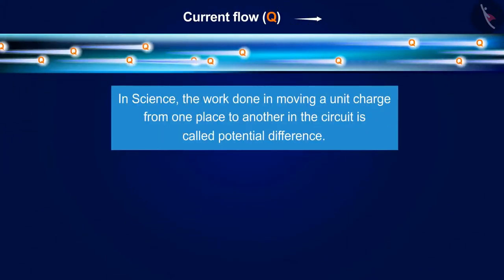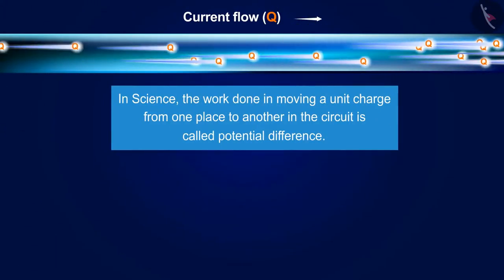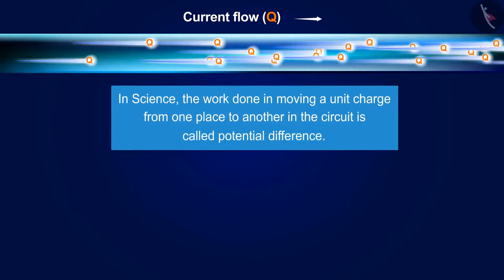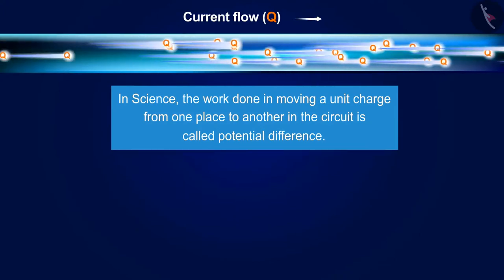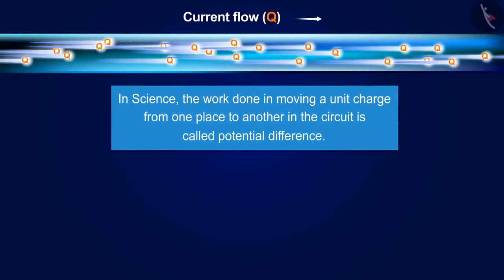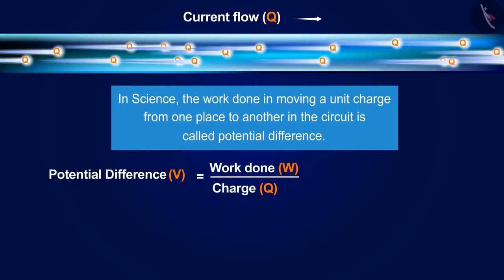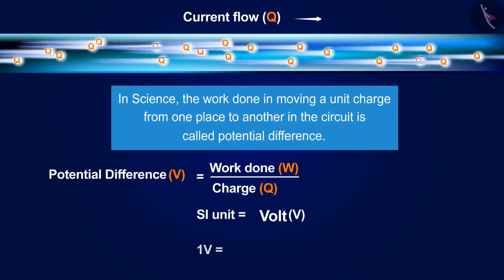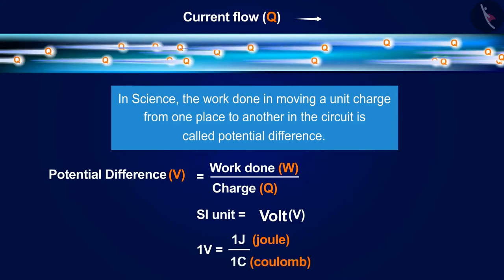In science, the work done in moving a unit charge from one place to another in the circuit is called potential difference. The difference is represented by the symbol V and its SI unit is volt. A volt is the ratio of a joule and a coulomb.